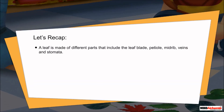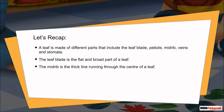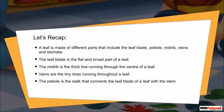Let us recap. A leaf is made up of different parts that include the leaf blade, petiole, midrib, veins, and stomata. The leaf blade is the flat and broad part of a leaf. The midrib is the thick line running through the center of a leaf. Veins are the tiny lines running throughout a leaf. The petiole is the stalk that connects the leaf blade with the stem. Stomata are the tiny openings present on a leaf.